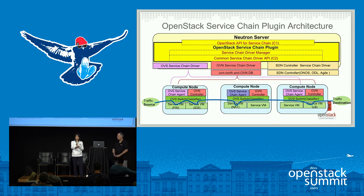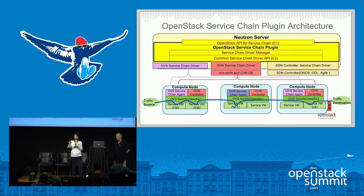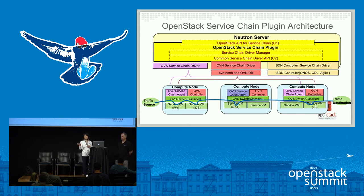Today we are going to concentrate on the OVN path — how we do the OVN service chain driver, northbound DB, southbound DB, and program the flow properly. You can also plug in different SDN controllers. We have already implemented the OVN controller path to do the service function chain functionality defined through the OpenStack service chain API. We are currently also working on the ODL path, and basically any vendor-specific controller can also plug in.